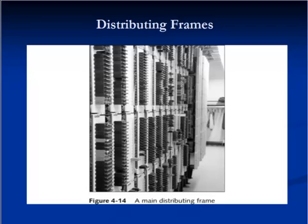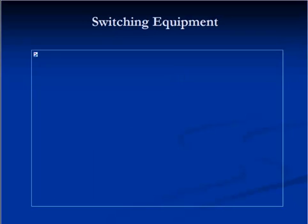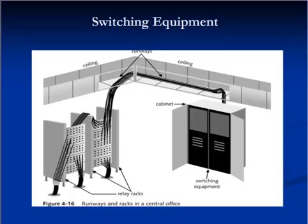Each line entering the central office terminates at a punch down block, maybe several punch down blocks, on one side of the MDF. On the other side of the MDF, lines exit a separate set of punch down blocks to eventually connect with the central office switches. Finally, racks or relay racks are typically heavy metal frames designed to hold equipment such as switches, ensure simple interconnection between equipment, and position equipment so that technicians can easily work on them.